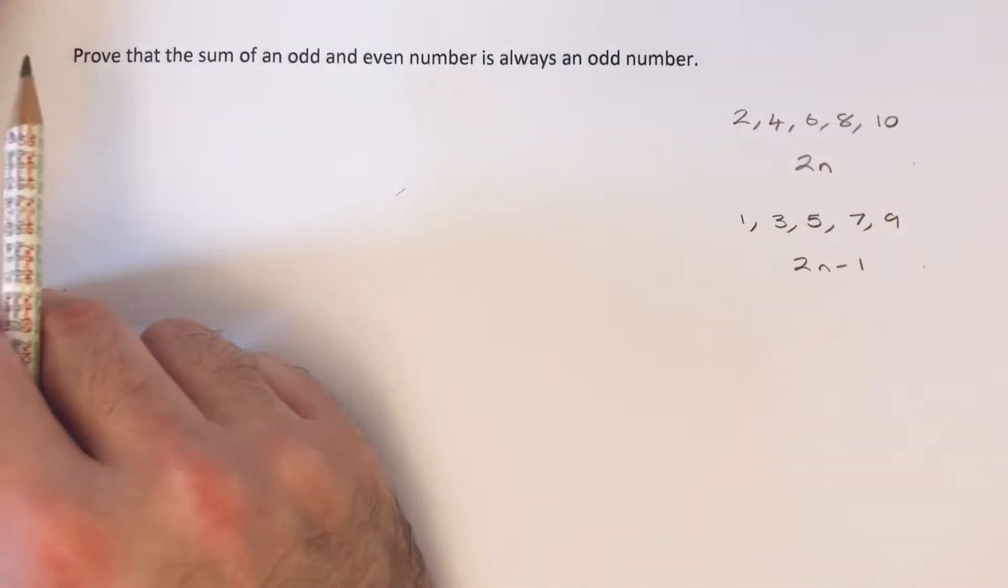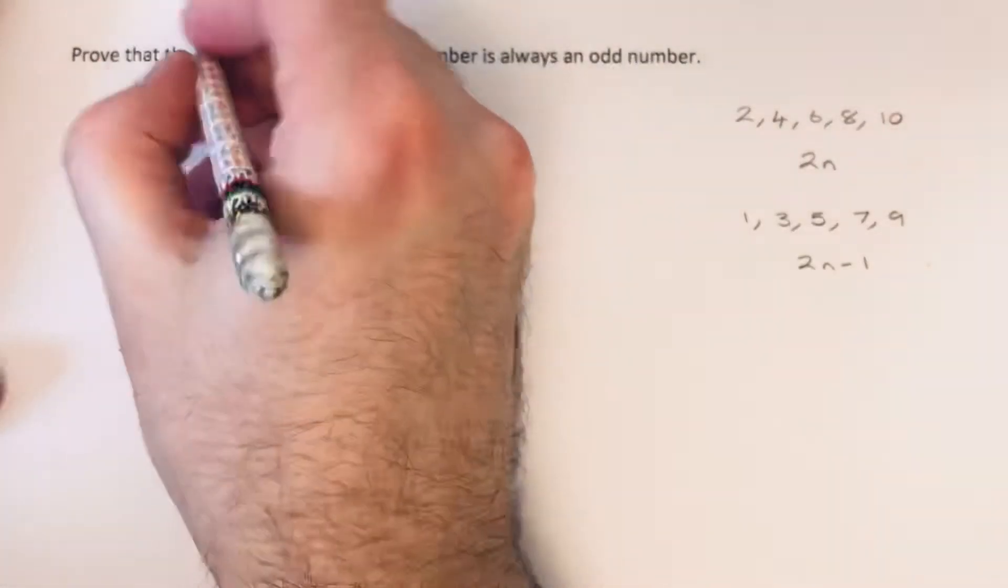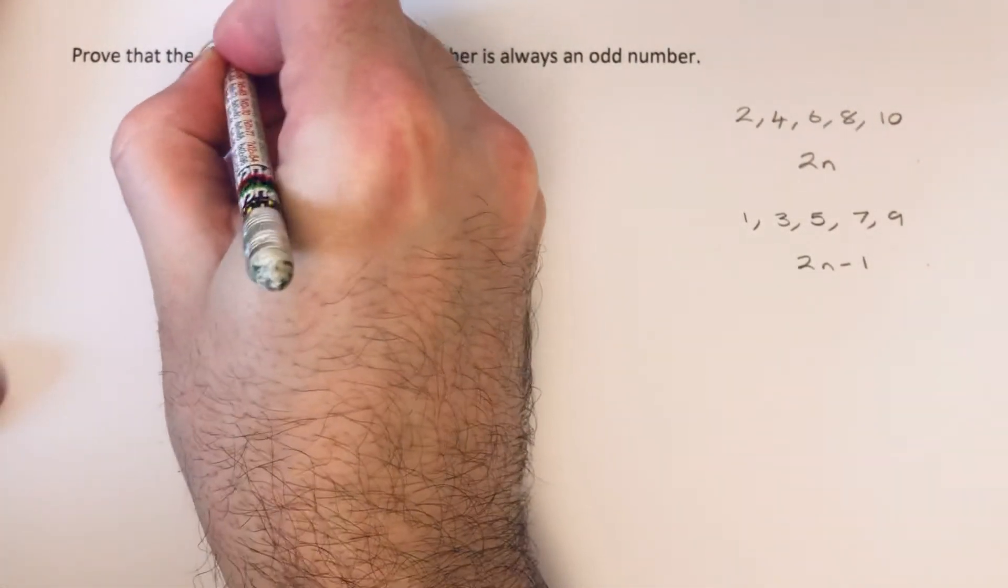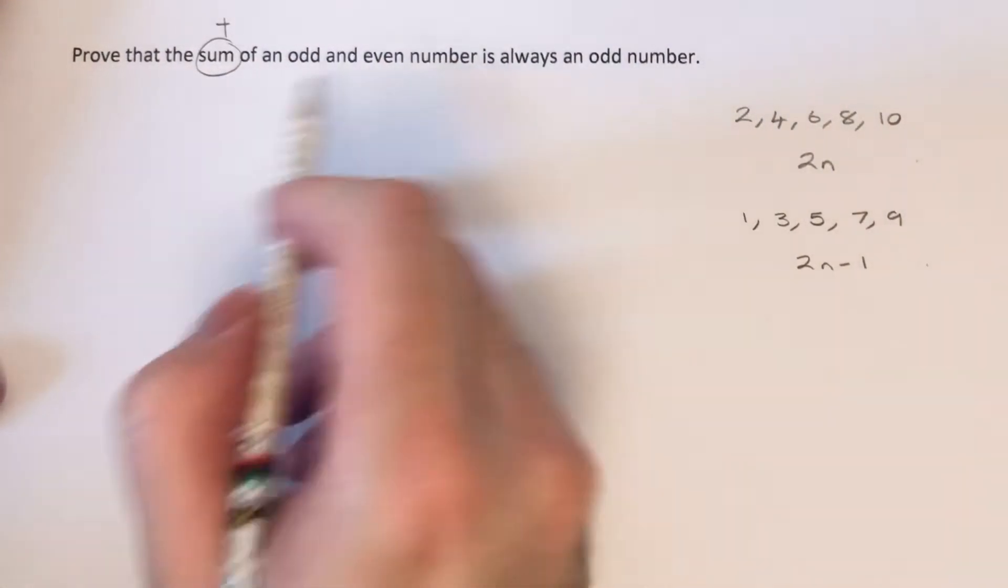So let's get back to our proof. Sum means we need to add the odd and the even number together.